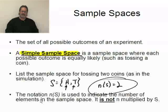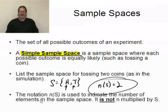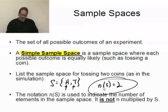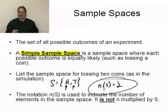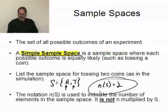N of S is function notation — it's the number of elements in the sample space. It is not algebraic notation. It is not N times S. This is not a multiplication. Keep that in mind, because that's a very common mistake. When we start using this notation in equations, people start canceling out N's when you can't. There's no N here to cancel out. N of S stays together — it's function notation, the number of elements in the sample space.